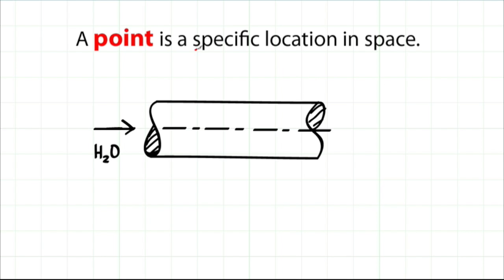A point is a specific location in space, an XYZ point in Cartesians, R Theta Z in cylindrical coordinates.